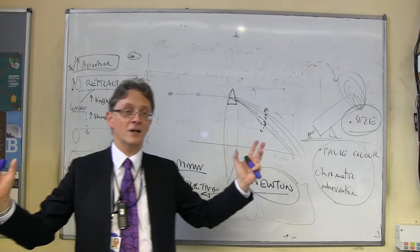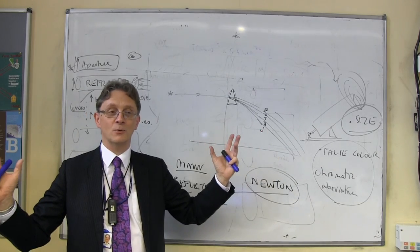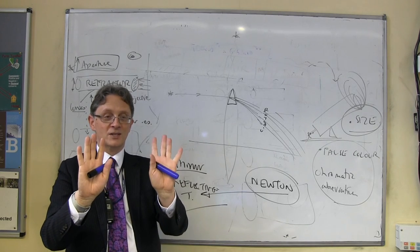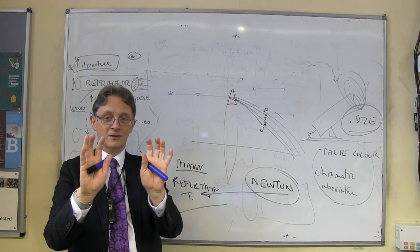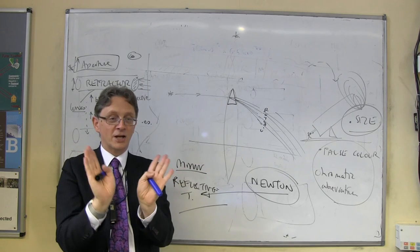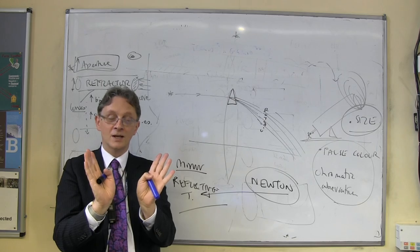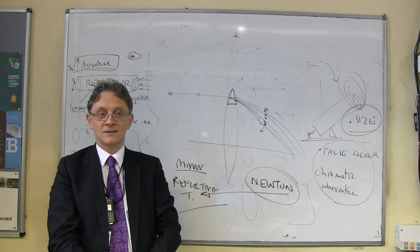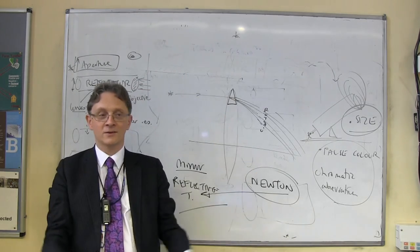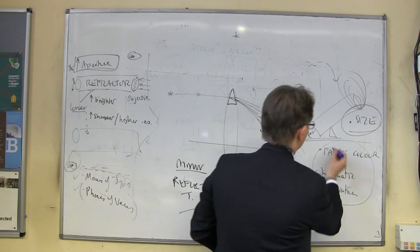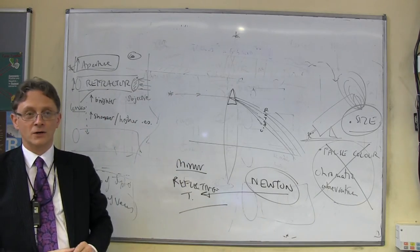Having the heavy bit at the bottom of the tube basic engineering makes it so much easier. And what's the big advantage of a mirror over a lens in terms of supporting it? Yeah, you can put supports on the back of it. In fact some modern telescopes have little hydraulic rams on the back so if the mirror goes out of shape the computer can actually push the mirror back into shape. Can you do that on a lens? You can't, because you can't block the hole. And the second thing is you get rid of false colour.